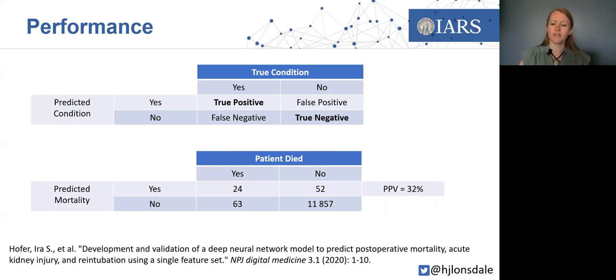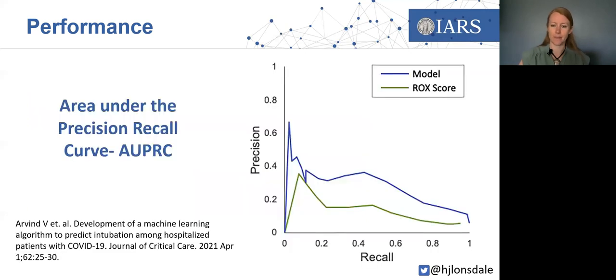A more in-depth way to look at how prevalence affects performance is the precision recall curve. Here we return to the COVID study by Arvind and colleagues. We have moved recall, better known to us in medicine as positive, as true positive rate or sensitivity, onto the x-axis, where it's easiest to think of it as how many patients the model identified who need to be intubated. Now the y-axis shows precision or the positive predictive value, which we can think of as how often the model was right.